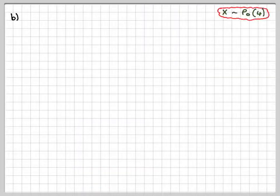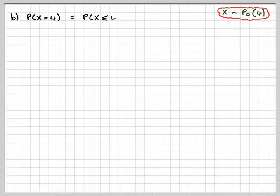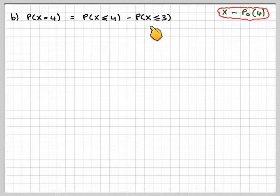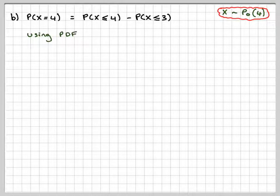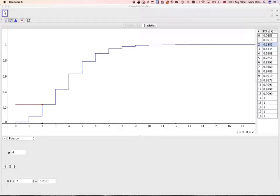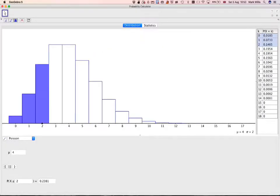The next one: probability that X equals 4. To find P(X = 4), we need to do P(X ≤ 4) minus P(X ≤ 3). Using the PDF in GeoGebra, go back to the PDF by clicking that again.